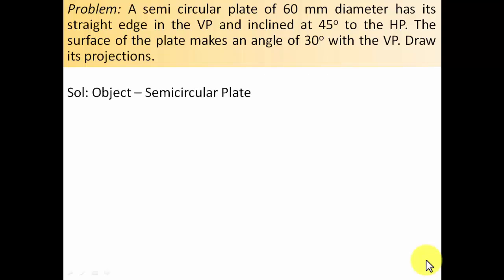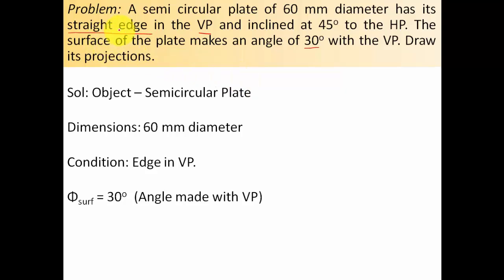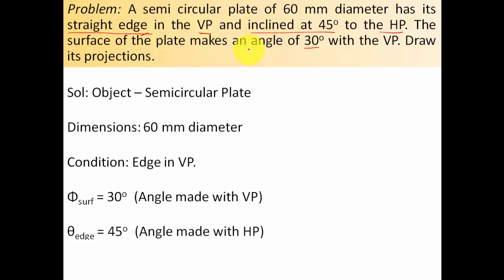The object is a semi-circular plate with a diameter of 60 millimeters. The first condition is the straight edge is in the VP. The surface makes an angle of 30 degrees with the VP, so φ_surface equals 30 degrees. The straight edge in the VP is also inclined at 45 degrees to the HP, so θ_straight_edge equals 45 degrees. We've got all the conditions worked out.